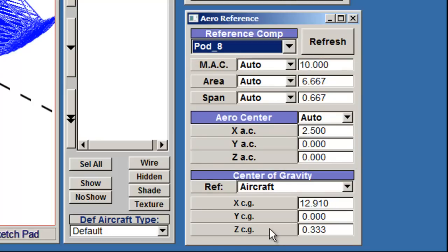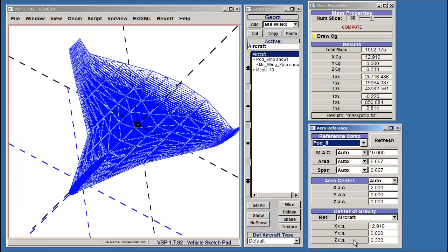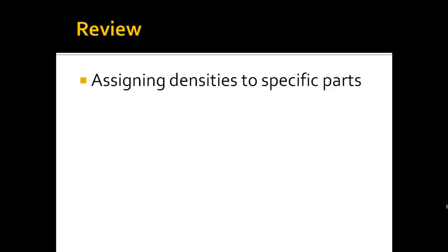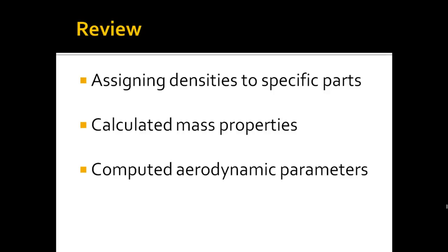This completes your introduction to the Mass Properties option and the Arrow Reference option. You were introduced to the concept of assigning a density to specific parts. Using those densities, you calculated various mass properties of your aircraft. You were also introduced to the Arrow Reference browser and computed aerodynamic parameters.